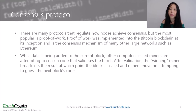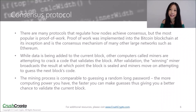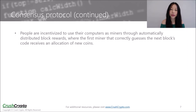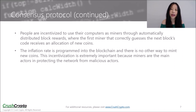After validation, the winning miner broadcasts the result, at which point the block is sealed and miners move on to attempt to guess the next block's code. The mining process is comparable to guessing a random long password — the more computing power you have, the faster you can make guesses, and that gives you a better chance of validating the current block. People are incentivized to use their computers as miners through automatically distributed block rewards, where the first miner that correctly guesses the next block's code receives an allocation of new coins. The inflation rate is programmed into the blockchain, and there's no other way to mint new coins.